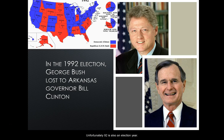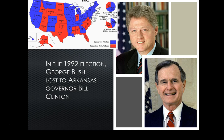Unfortunately, 1992 is also an election year. So George Bush runs against Arkansas Governor Bill Clinton, and unfortunately for Bush, Clinton wins — by a 68.8% electoral college vote.